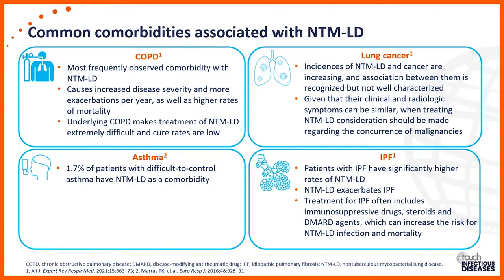The common comorbidities we see with NTM-LD are COPD, asthma, lung cancer, and pulmonary fibrosis, to name a few. Other immune deficiencies may cause additional comorbidities, and in certain geographical areas, sarcoidosis. COPD, with or without bronchiectasis, is known to have a worse prognosis and a more severe management course than without both diseases.